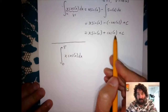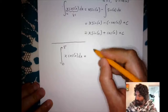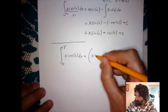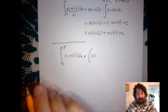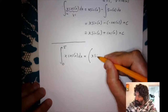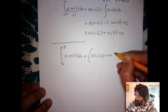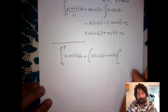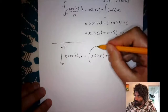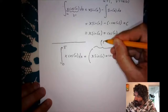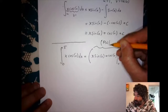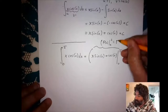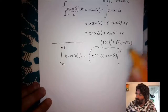We've already found the indefinite integral, so we can write the definite integral as x·sine x plus cosine x evaluated between the two endpoints. We don't need the constant because it cancels when you subtract the function at the two endpoints. This notation — the function evaluated from a to b — means f(b) minus f(a), according to the fundamental theorem of calculus.